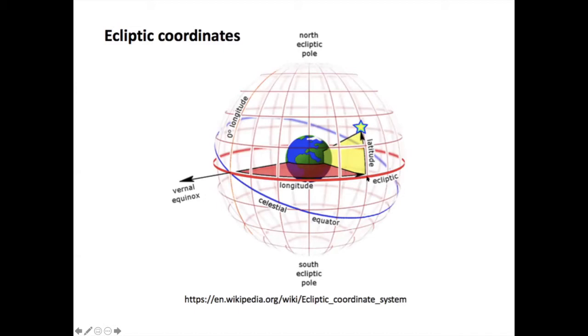Ecliptic latitude is from the ecliptic to the star up to the ecliptic north pole. The same way that the celestial equator, the great circle of the celestial equator, defines two poles, so does the ecliptic. You have now the north ecliptic pole and the south ecliptic pole.